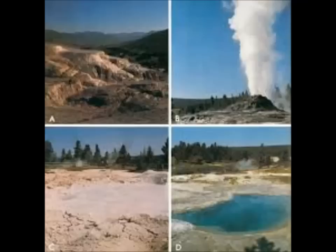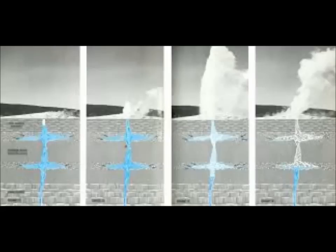Last June, an earthquake swarm of over 2,500 tremors over three months was recorded at Yellowstone National Park. This is of course the location of the supervolcano. Such swarms are a regular occurrence, making up about 50% of seismic activity there.